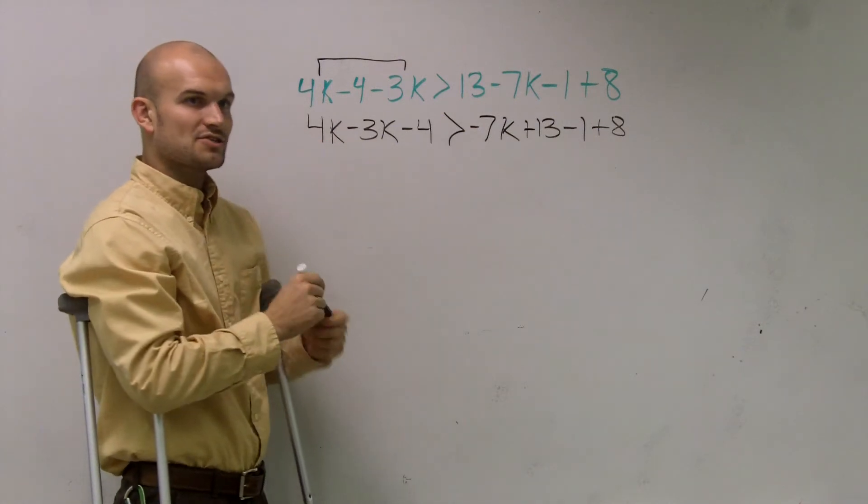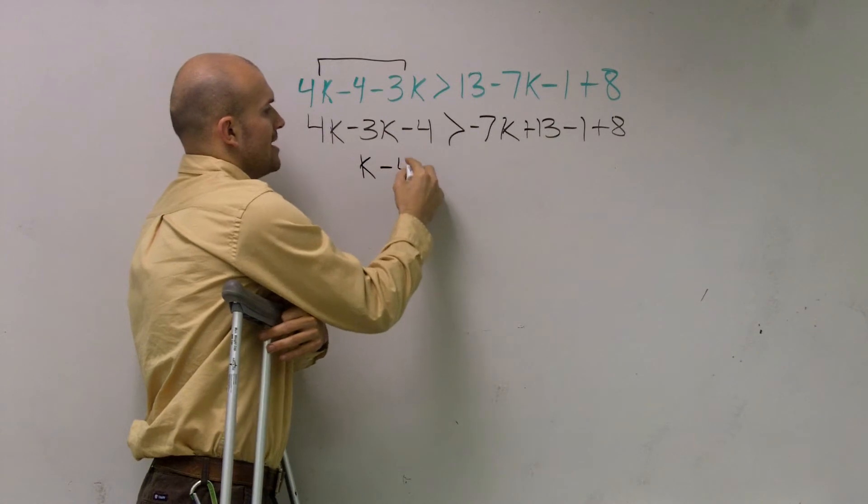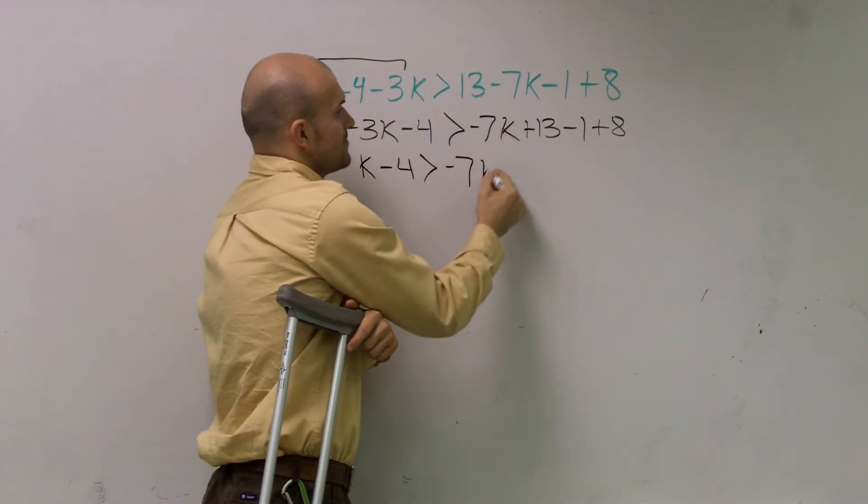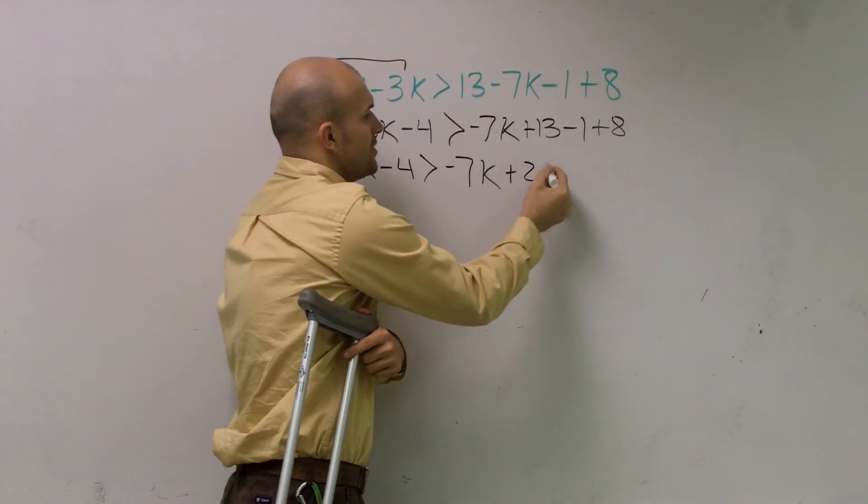So 4k minus 3k is just going to be 1k, minus 4 is greater than... Here I have a negative 7k. Then I have 13 minus 1 is 12, plus 8 is going to give me positive 20.